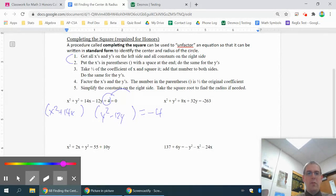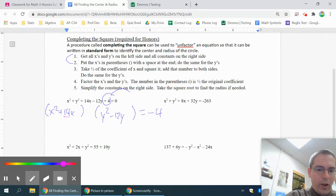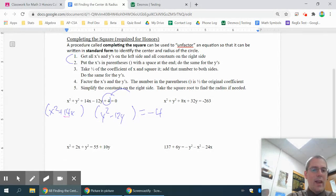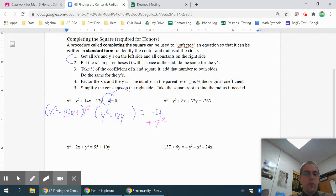I'm going to take half the coefficient of the x and square it. So the coefficient is 14. Take half of it and square it. So that's going to be 7 squared. So I'm going to add 7 squared here in this parentheses. And I'm going to add 7 squared to the other side. Remember, if you do something to one side of the equation, you also have to do it to the other side of the equation.